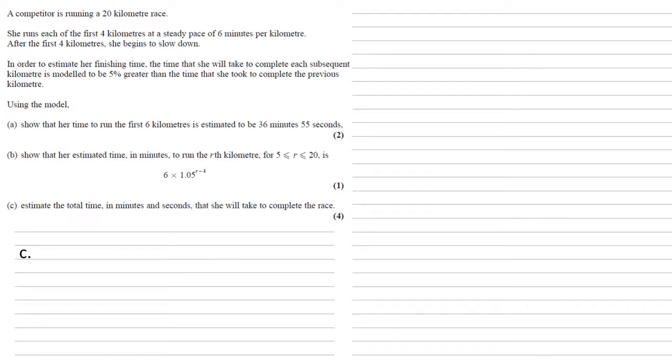For part c, we need to estimate the total time in minutes and seconds that she will take to complete the race. So we know that the first four kilometers take six minutes each, so we've got 4 × 6 = 24.